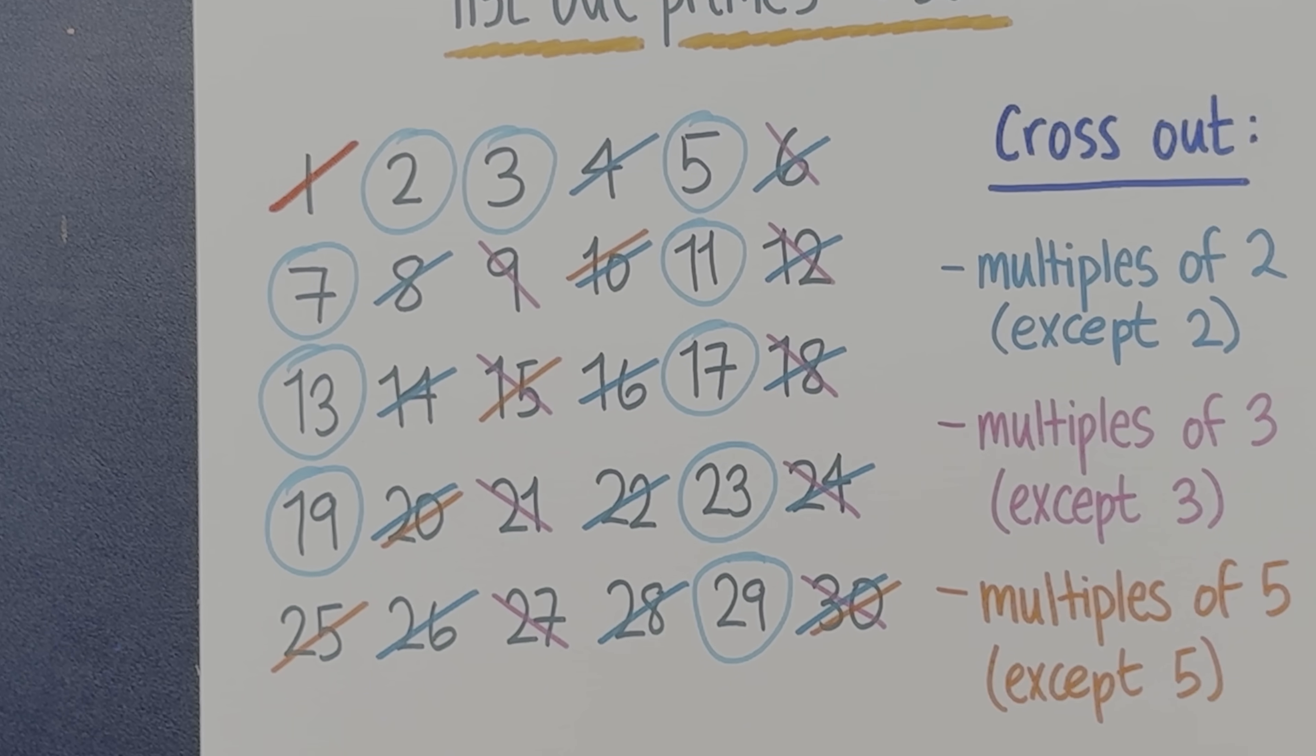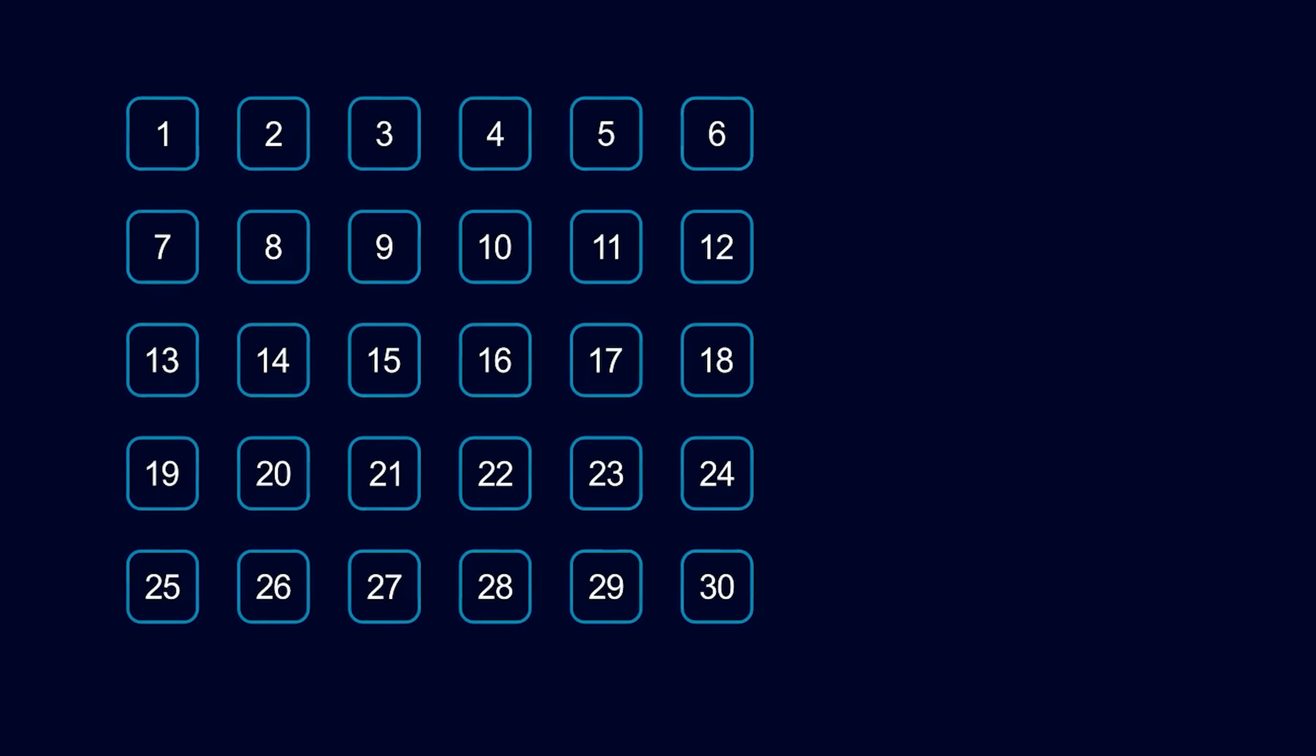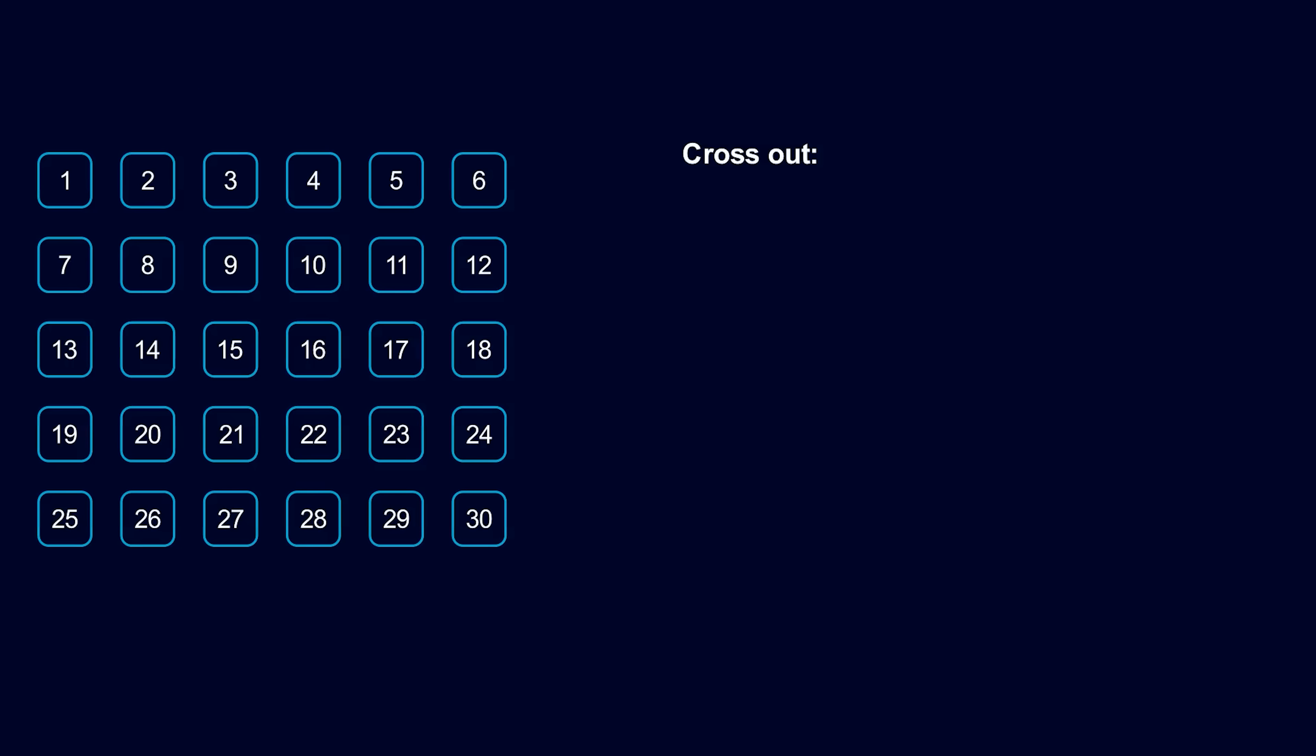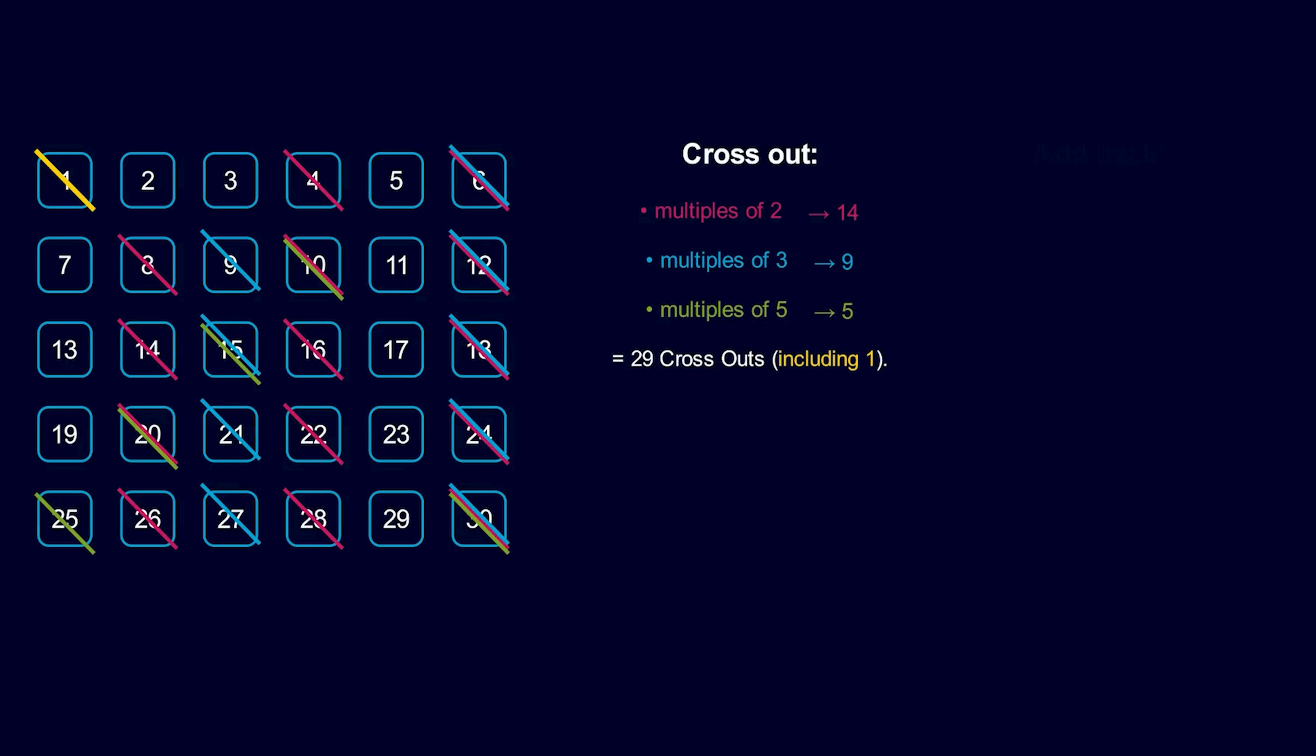But we don't want to just list the primes less than 30, we want to count them. So let's count how many things we crossed out at each stage. We crossed out 14 multiples of 2, 9 multiples of 3, and 5 multiples of 5. Adding these up, we've crossed out 29 numbers, including 1, because 1 is not a prime. But this isn't quite right, because some numbers got counted twice.